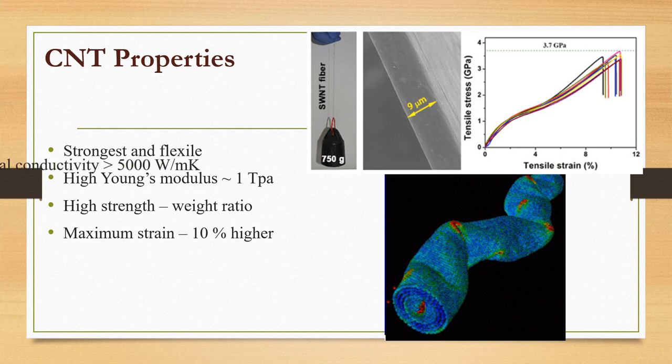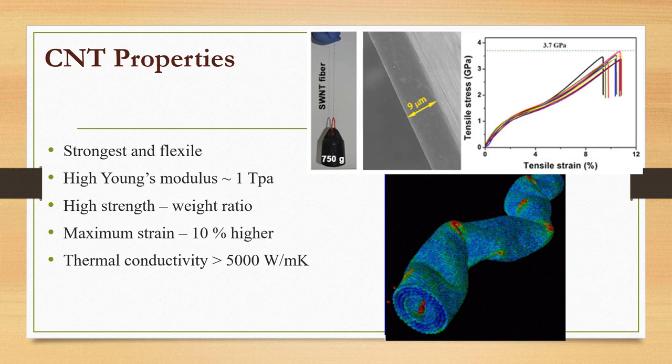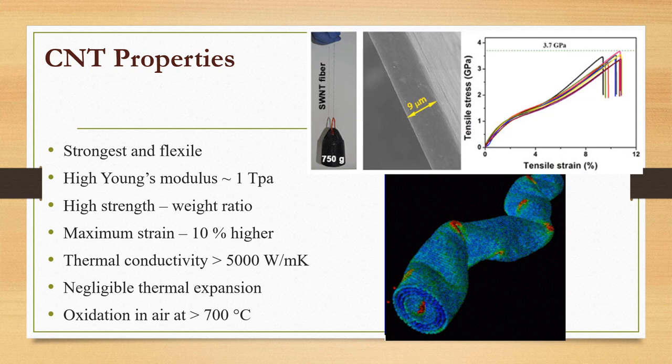Thermal conductivity is the highest at approximately 5000 watts per meter per kelvin in the axial direction with small values in the radial direction. Negligible thermal expansion occurs and oxidation in air occurs at high temperatures over 700 degrees Celsius.